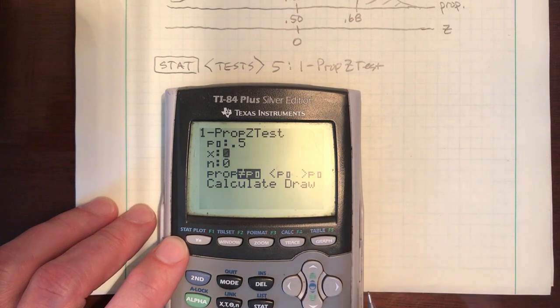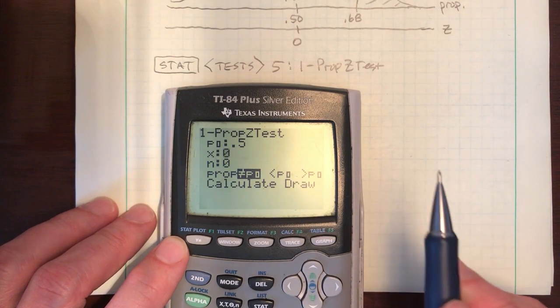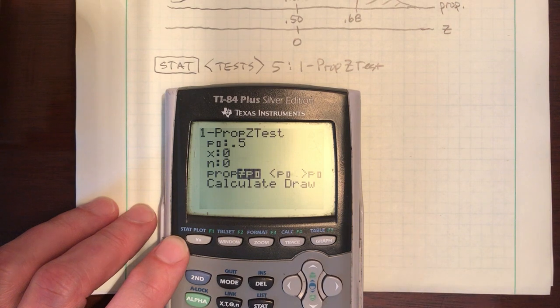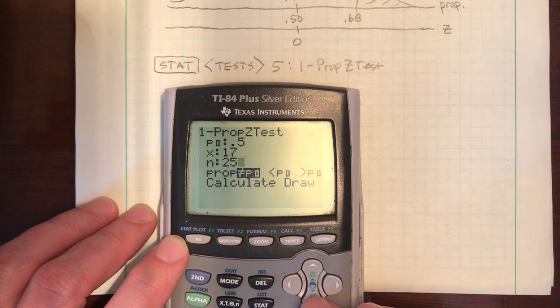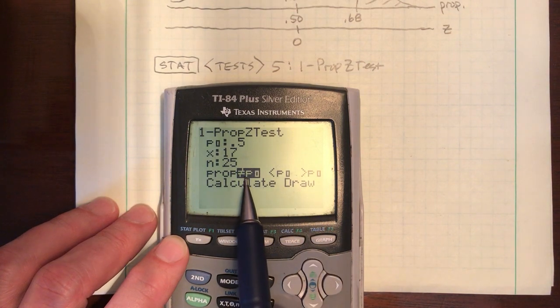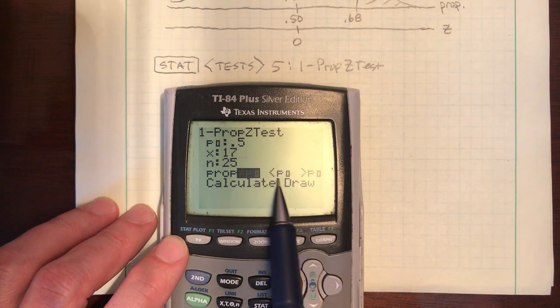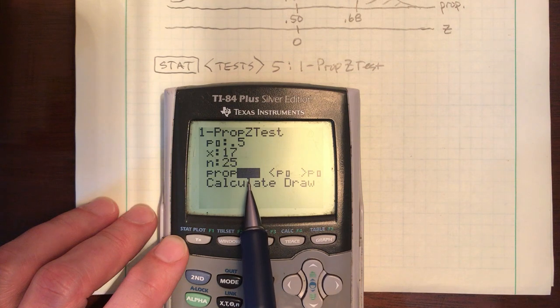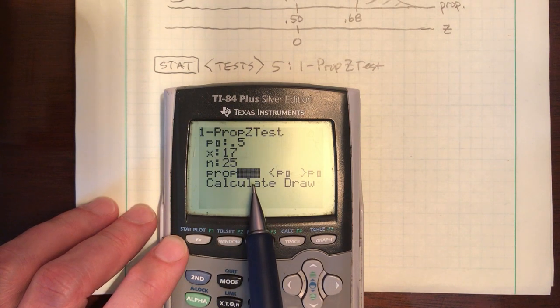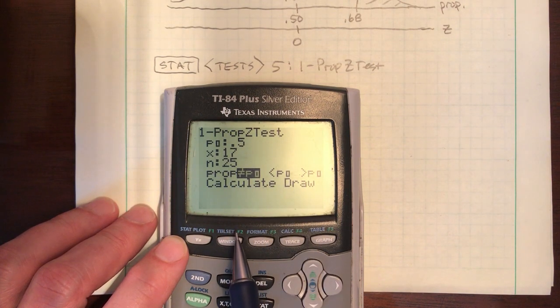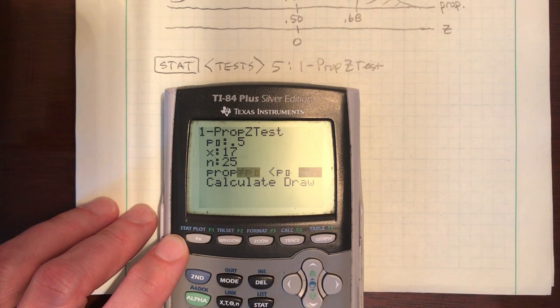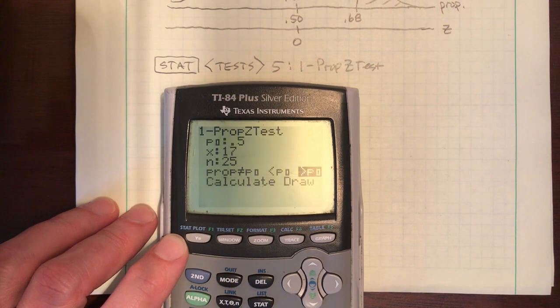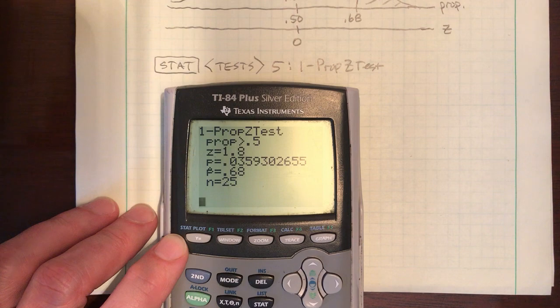You'll see a few prompts. The first P sub zero is your calculator asking for your null for your proportion. We know it's 50 percent, so you type in the decimal point five. X and N, that's my data, that's my evidence that we had at the beginning. 17 students had tattoos, 25 students were surveyed. The last step is you have to describe what is your alternative. There's going to be three options, and we saw that in the first video. It could either be less than, greater than, or not equal to. Well your alternative was greater than, that was majority, so you choose that by hitting enter. And then finally calculate.